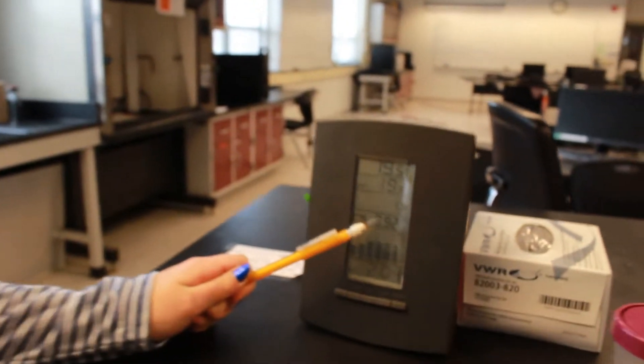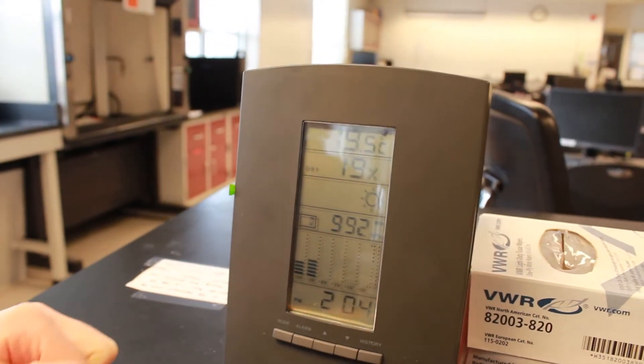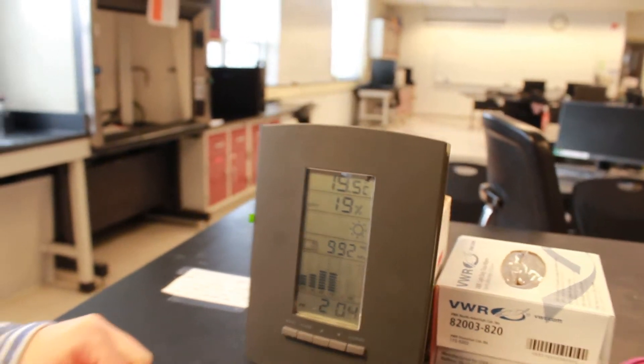So now we're going to get the barometric pressure while we're waiting for our water to cool. And if you look here, it's 992 millibars, which is 0.992 bar, which we can later convert to atmospheres at this point.